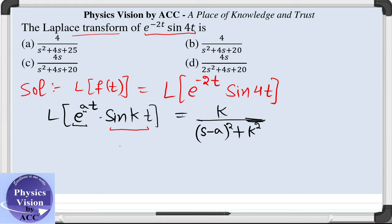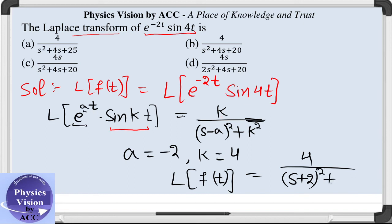So this is the complete formula. Now substituting A is equal to minus 2 and k is equal to 4, we get our result that Laplace of f of t, the given function, is 4 upon s plus 2 square plus 4 square, that is 4 by... now solving this.